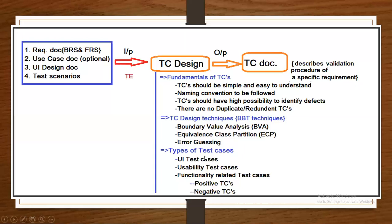Then, types of test cases. We generally derive three types of test cases: user interface test cases, usability test cases, and functionality-related test cases. For functionality-related test cases, we further have two things: positive test cases and negative test cases. This is what the test case design phase covers, and I am going to explain this in more detail now.